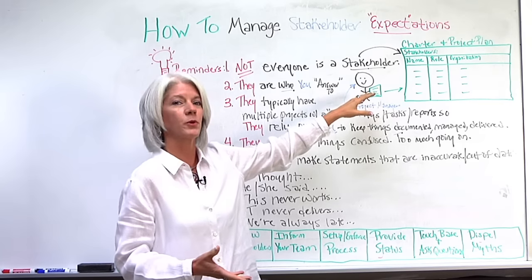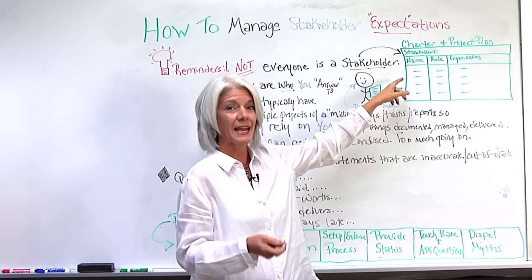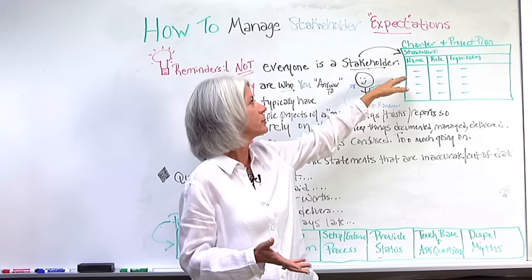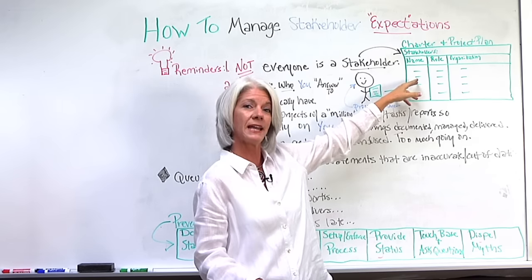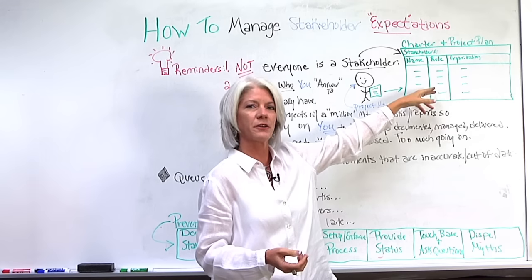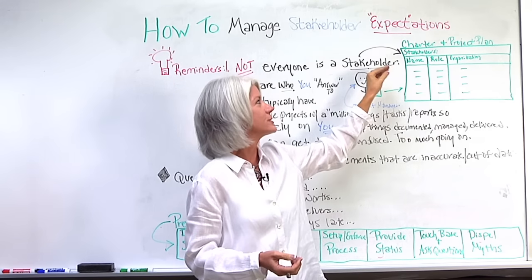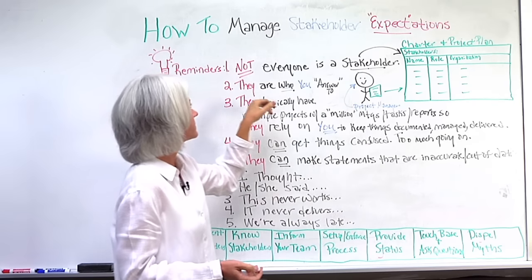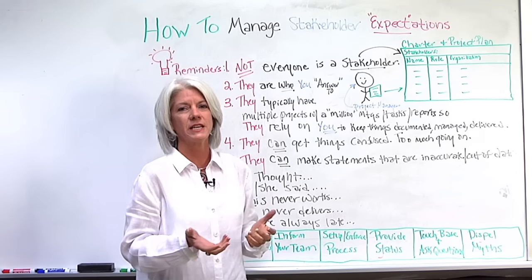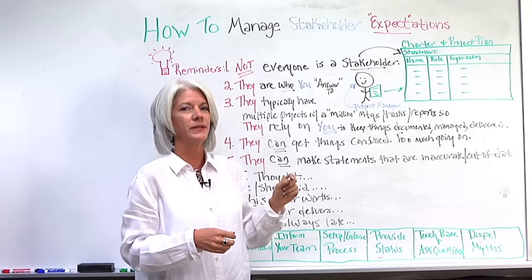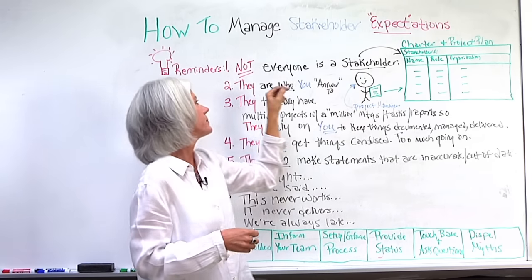The formal stakeholders are documented typically in your charter and/or your project plan. Stakeholders will be identified by name, the role they're playing on the project, and the organization they're representing. Those are the true stakeholders. Anyone else from those organizations who has feedback needs to be redirected to their stakeholders for them to provide input through the proper channels.